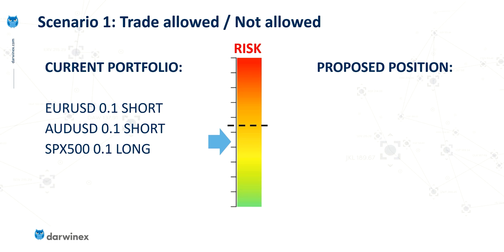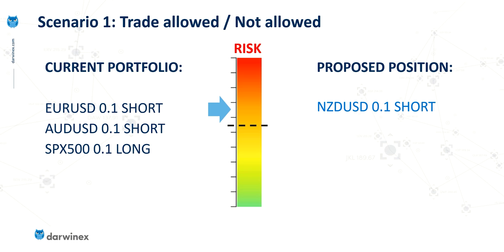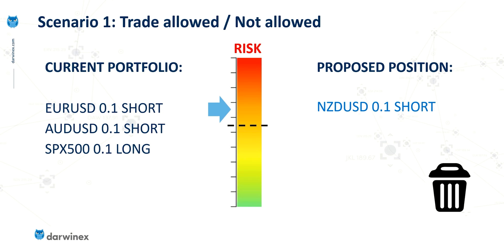If one of our trading strategies determines there's an opportunity for a new position — let's say a short position in New Zealand dollar USD — we can perform an assessment of what the portfolio risk would be if this position was allowed to open. In this case, it might increase the risk above the black dotted threshold line. Depending on our risk appetite, that means we wouldn't be allowed to open that position and would cancel any processing of it.